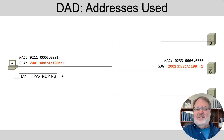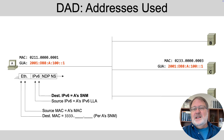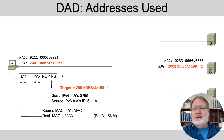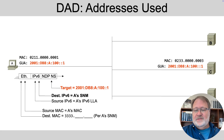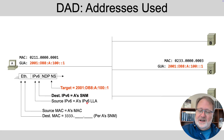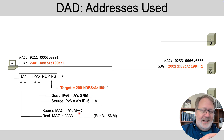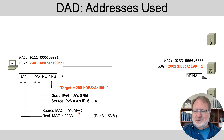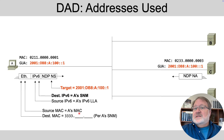Now let's get into some bonus points. If you understand the solicited node multicast addresses and Ethernet multicast addresses used in this message, I'd consider that a bonus, because you don't really have to know that to understand that DAD is happening and what its benefit is. With a target of this IPv6 address, there'd be a solicited node multicast address. If you could derive the specific solicited node multicast address, bonus points. And if you could derive the Ethernet MAC address from the solicited node multicast address, even more bonus points.